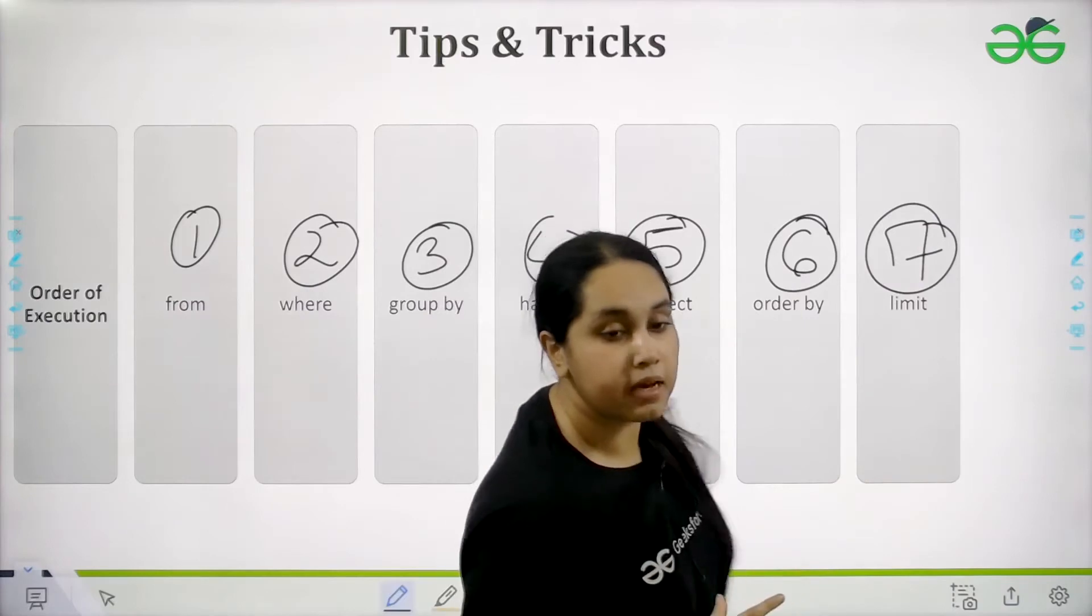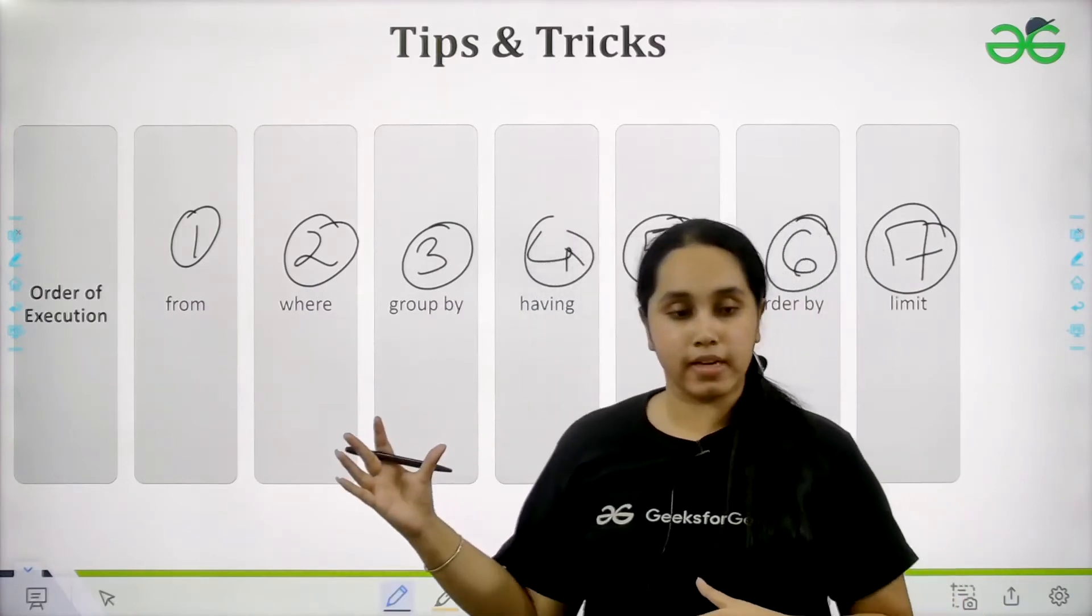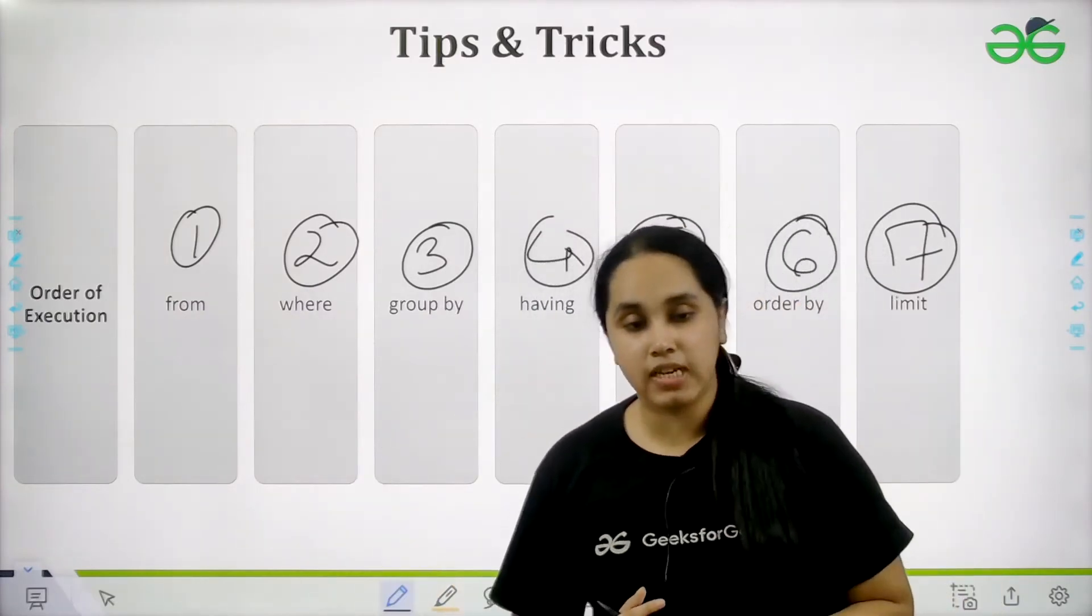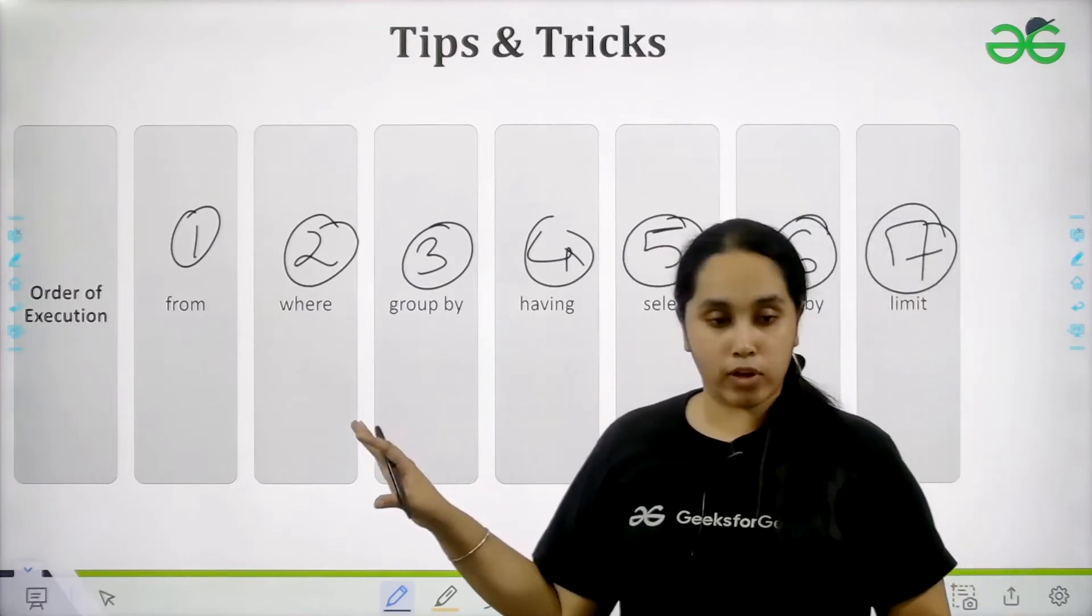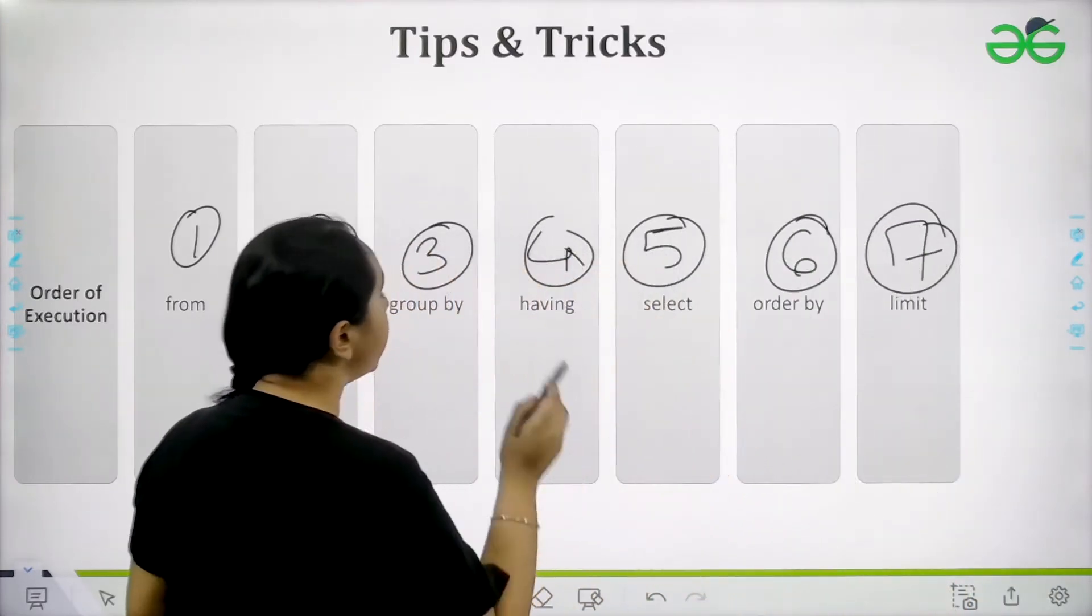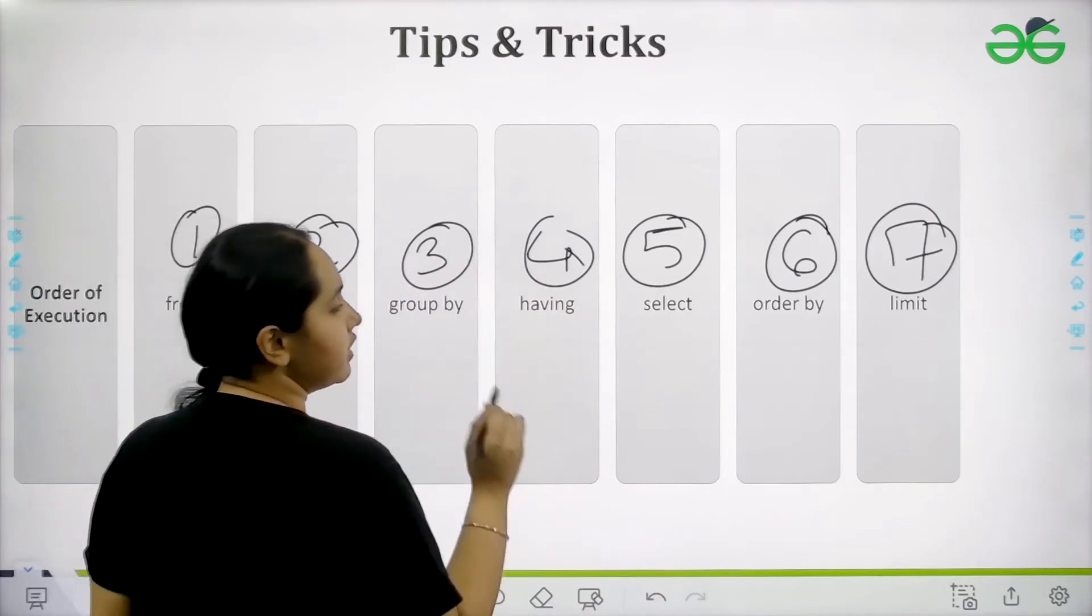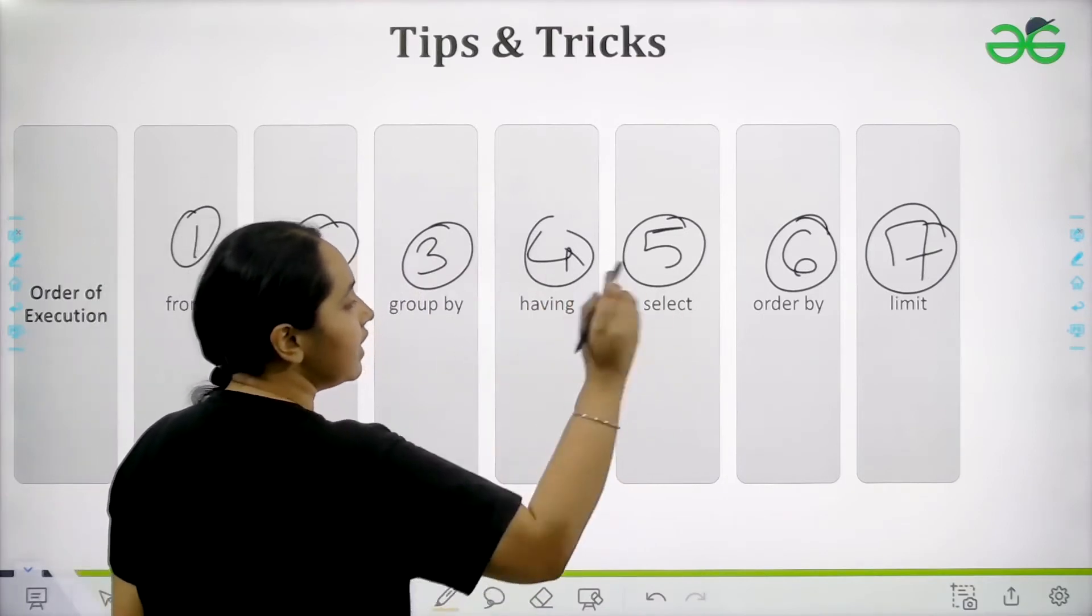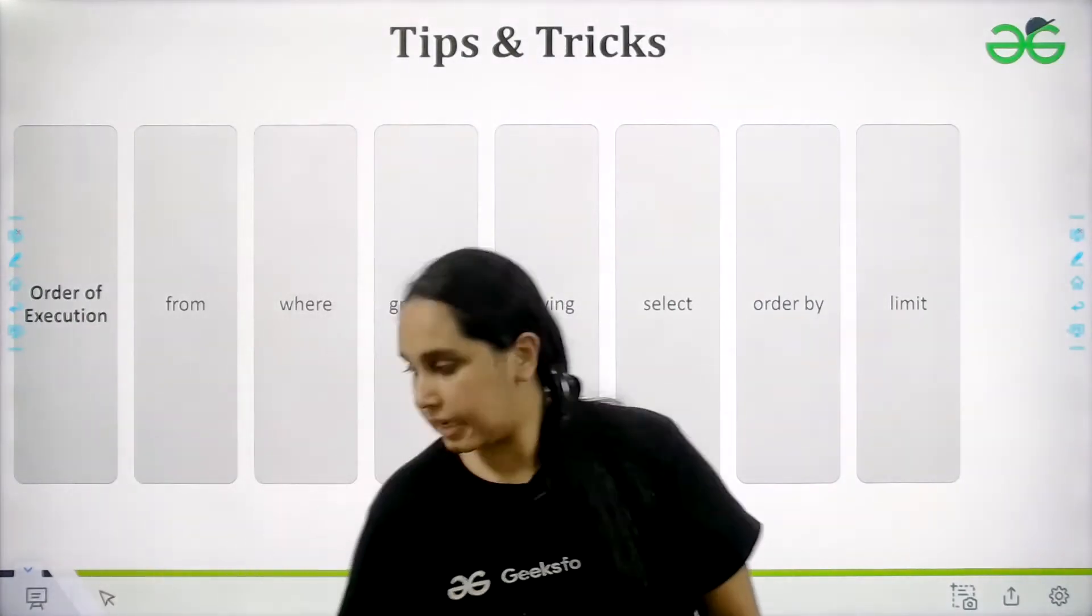So basically, you need to execute your commands in this order. You need to write them in this order. So this is very important. So first is FROM, second is WHERE, third is GROUP BY, fourth is HAVING, fifth is SELECT, sixth is ORDER BY, seventh is LIMIT. So I hope you are clear.